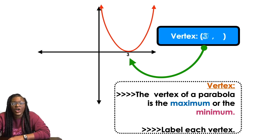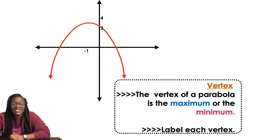It's sitting on the x-axis, so my vertex is going to be 3 comma 0. And it happens to be a minimum because it's a low point. Anytime it's a low point, it's also a minimum.